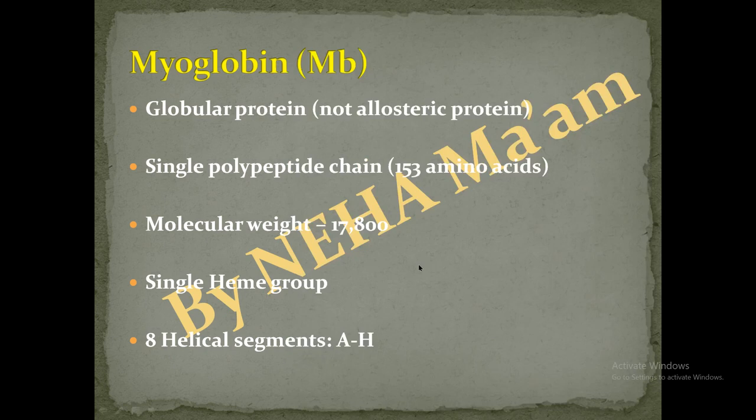Let us first consider what is myoglobin. Myoglobin is also known as muscle protein. The symbol is MB. This is a globular protein — a small spherical protein that is water-soluble. Myoglobin is not in the allosteric protein category.